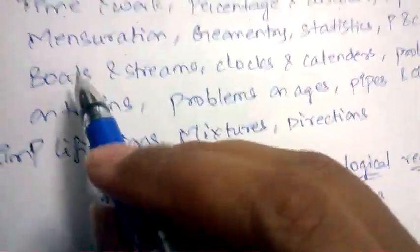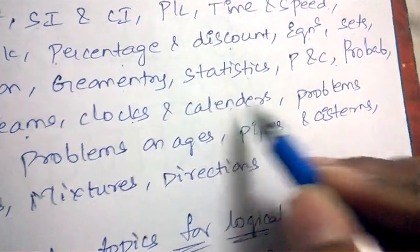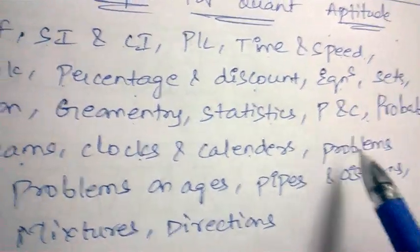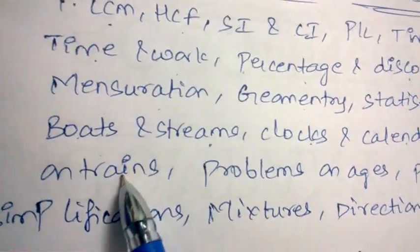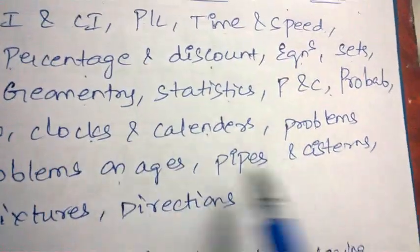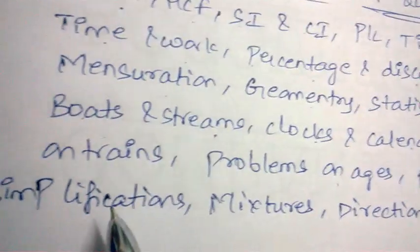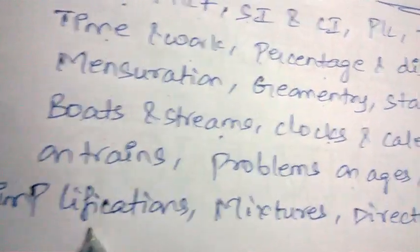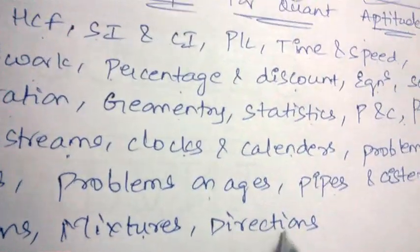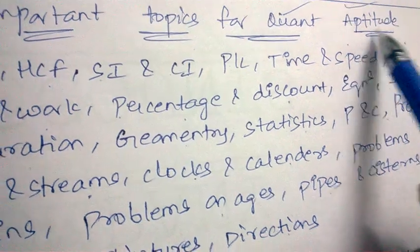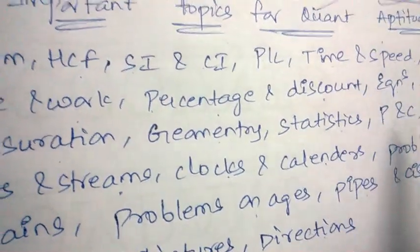Also important are boats and streams, problems on clocks and calendars, problems on trains, problems on ages, problems on pipes and cisterns, simplification problems, mixture problems, direction problems, etc. These are a few important topics for quantitative aptitude.